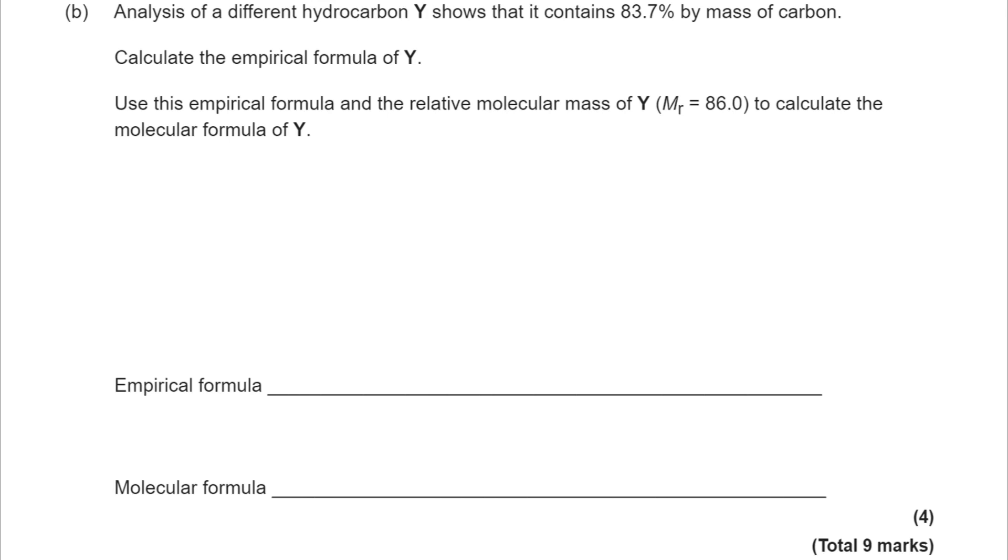And we've got a relatively straightforward empirical formula calculation. Build up the table. I can put in all of the information that I can derive from the question or from the periodic table. It's hydrocarbon, so I can work out by difference that I've got 16.3% of hydrogen. That then adds up to 100%. And I can then do my M over MR for each and get my molar quantities.